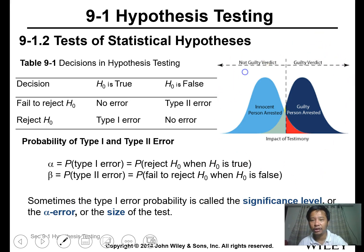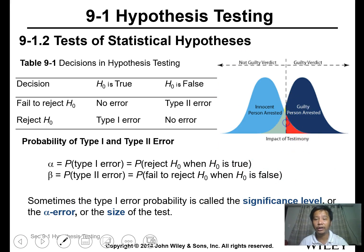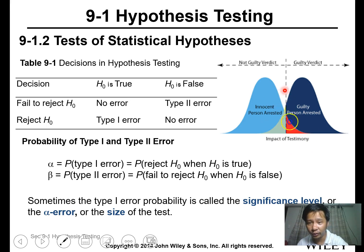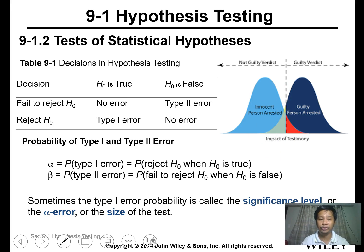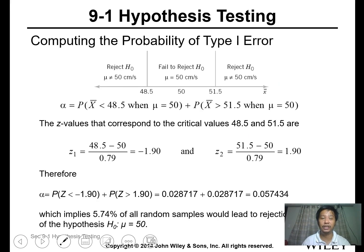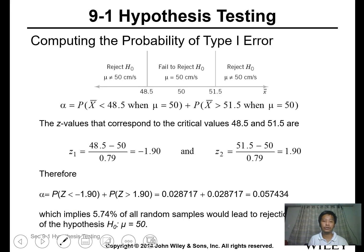A useful analogy: a Type 1 error is like a guilty verdict when the person is actually innocent, while a Type 2 error is a not-guilty verdict when the person is actually guilty.